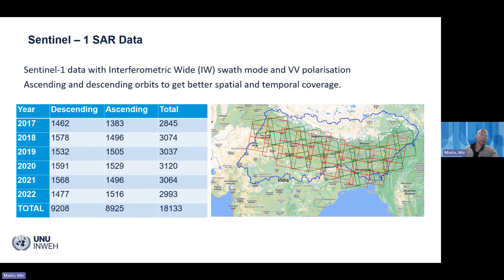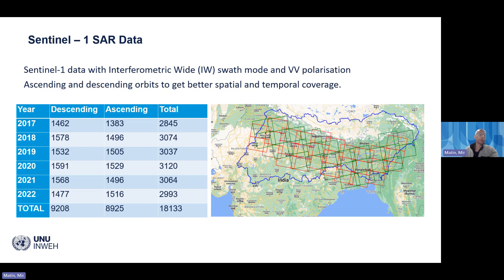For inundation mapping we use Sentinel-1 SAR data. Sentinel-1 has different orbit types — ascending and descending — and different polarizations. Based on previous studies, we used both ascending and descending orbits to increase temporal and spatial resolution, covering all floodplain areas. We conducted this analysis from 2017 to 2022, generating one image every 15 days for flood extent, which required processing around 18,000 satellite images of Sentinel-1.